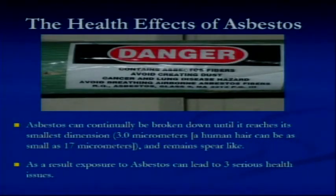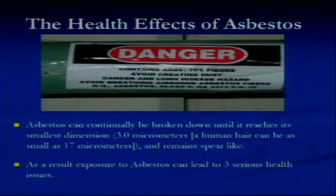The health effects. Asbestos can continually be broken down until it reaches its smallest dimension of 3 micrometers. To give you a comparison, a hair is 17 micrometers. The particles remain spear-like, and so that's the danger. That's what the health hazard is in asbestos - it breaks down so small and remains spear-like. As a result, exposure to asbestos can lead to three serious health issues.